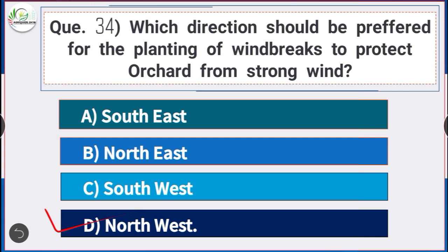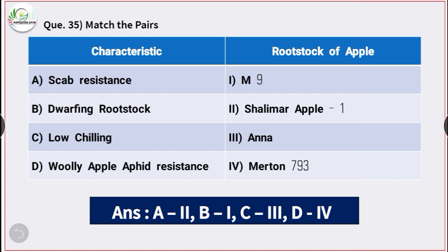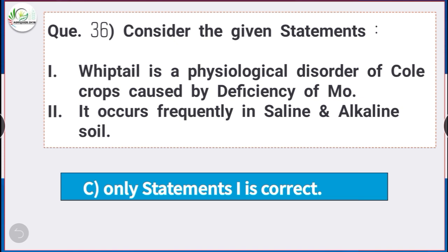Question number 35: Match the following. Scab disease is associated with rootstock Shalimar Apple 1. The dwarfing rootstock of apple is M9. Low chilling is associated with Anna rootstock of apple. Woolly apple aphid resistance is associated with Merton 793.